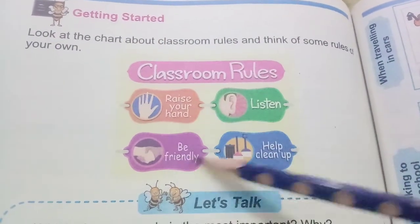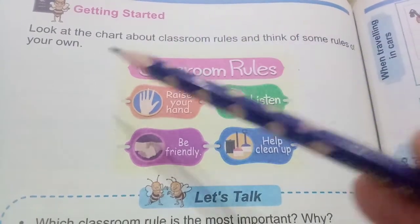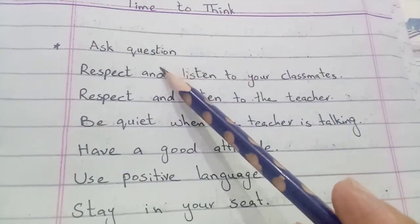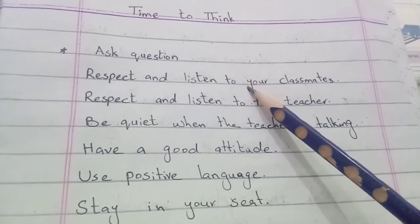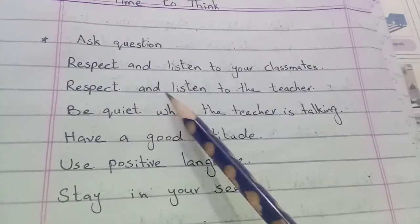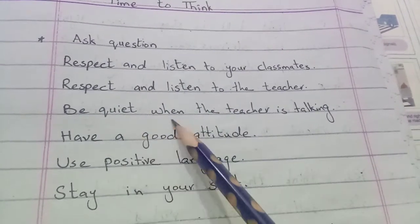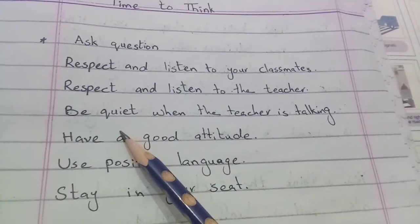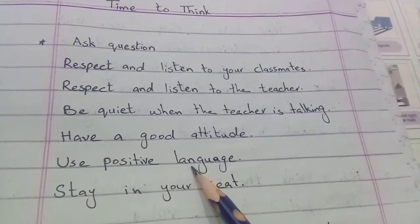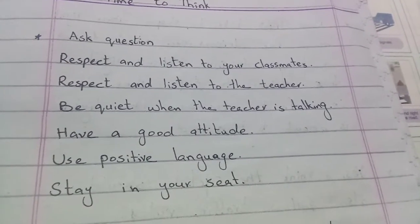Look at the chart — اس chart کو دیکھئے — about classroom rules. Think of some rules of your own — اور اپنے پاس سے کچھ اور rules سوچیں۔ Ask questions — سوالات پوچھیں۔ Respect and listen to your classmates and teacher. Be quiet when the teacher is talking. Have a good attitude, use positive language, and stay in your seat.